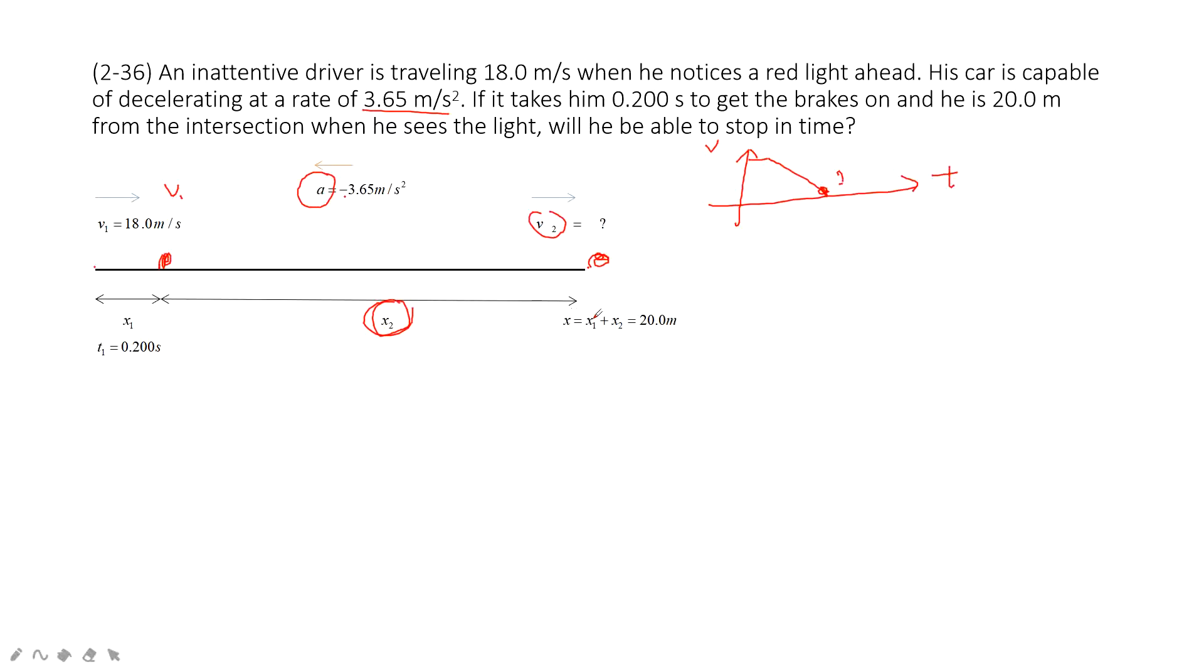x equals x1 plus x2 is a constant. We can find x1 first, then x2, then v2. First step is find x1. The car moves at constant velocity, so x1 is v1 times t1. Then we can find x2 by using the total x minus x1. We get the displacement in this deceleration region.